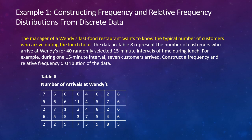Let's look at an example. The manager of a Wendy's fast food restaurant wants to know the typical number of customers who arrive during the lunch hour. The data in table 8 represents the number of customers who arrive at Wendy's for 40 randomly selected 15-minute intervals of time during lunch. For example, during one 15-minute interval, seven customers arrived. Construct a frequency and relative frequency distribution of the data. First of all, we have discrete data. Why is it discrete?